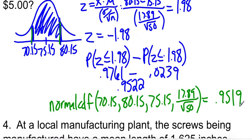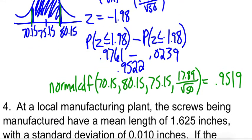So what this means is if we take a sample of 50 athletic shoes and we find the average price of that sample, we have a 95% chance that our average price is going to fall between $70.15 and $80.15. All right, let's do one more of these.